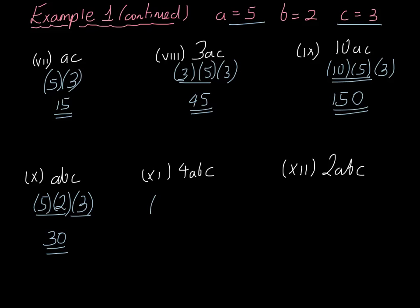4abc must mean 4 from the 4 here, then multiplied by a is 5, multiplied by b is 2, and multiplied by c is 3. 4 times 5 is 20, times the 2 is 40, times the 3 is equal to 120.